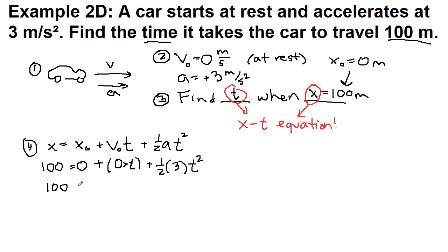So the left side stays 100. The 0 goes away. 0 times T is 0, so it goes away. And so we have 3 halves, or 1.5 T squared. Divide both sides by 1.5. So we get 66.7 equals T squared. So the last step of the math part is to take the square root of both sides. And so we get 8.16 seconds for the time.